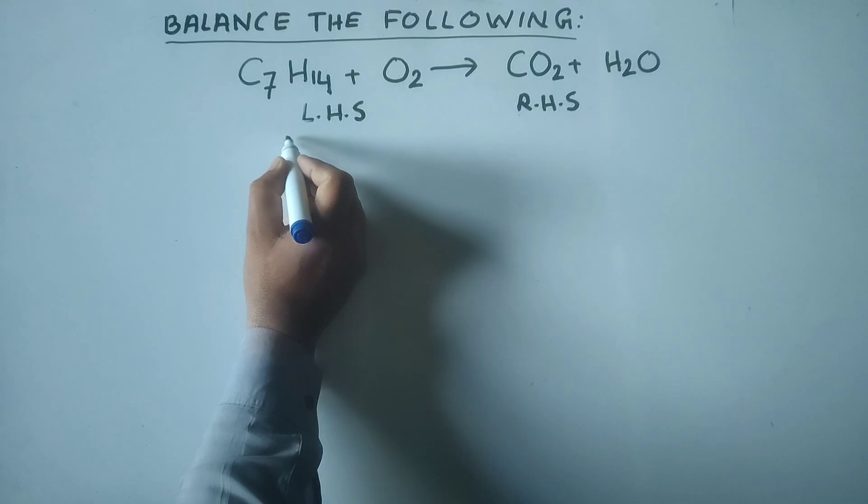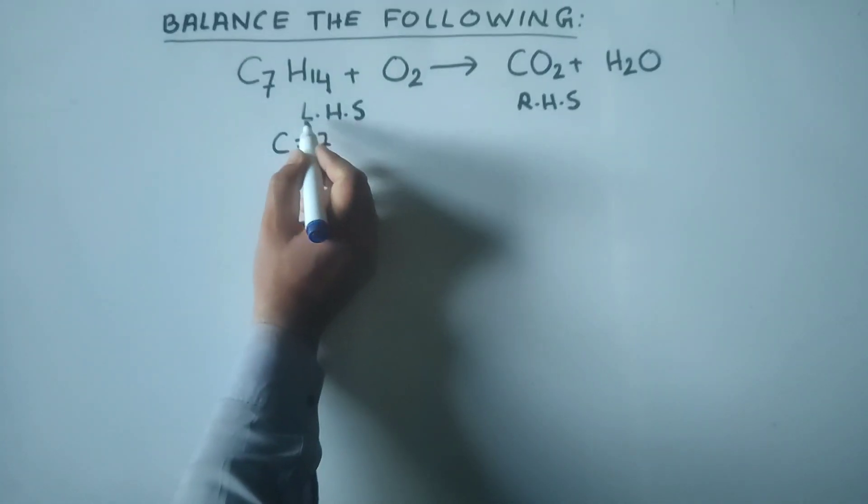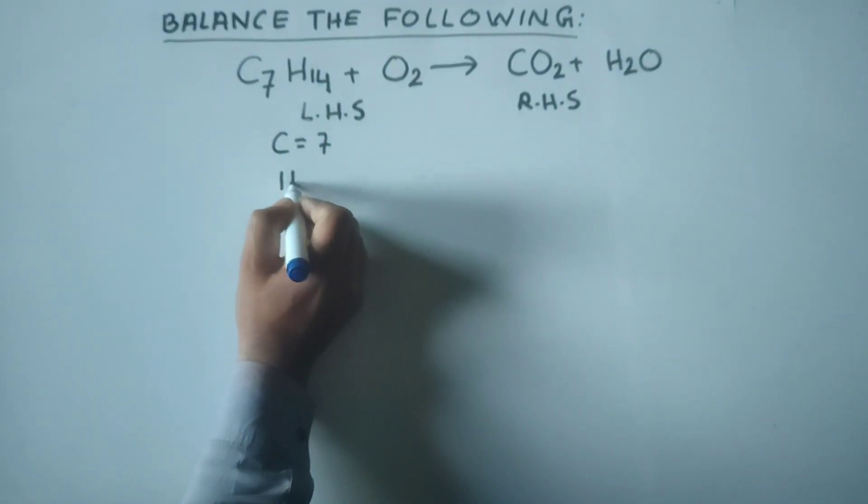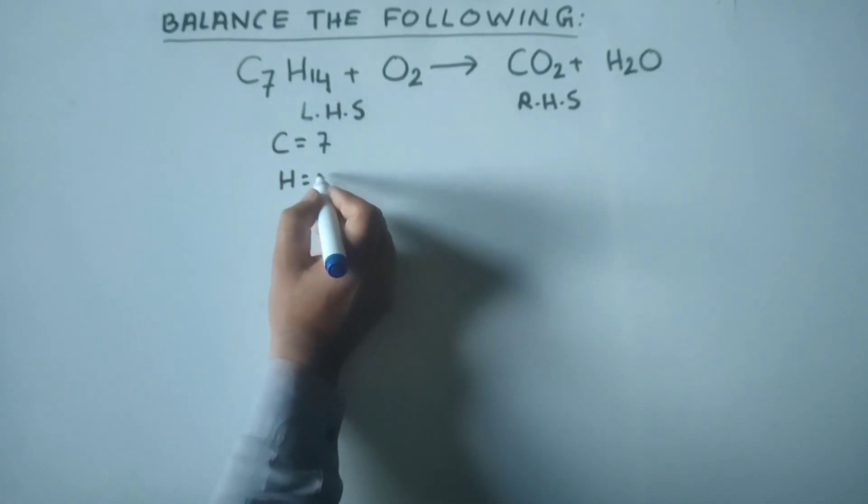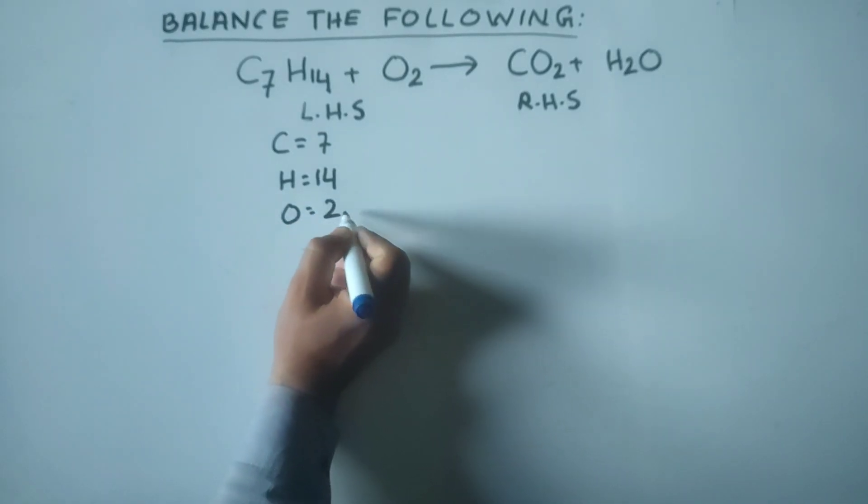On the left hand side we write the number of atoms of each element. The atom is carbon, there are seven carbon atoms. The second one is hydrogen, the number of hydrogen atoms are 14. Oxygen atoms are 2.